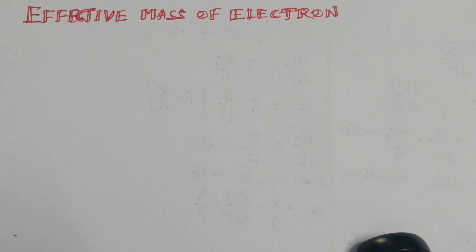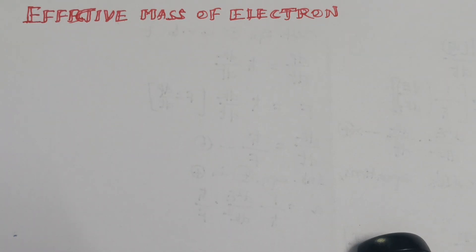When an electron is accelerated by an external electric or magnetic field in a periodic potential, the mass of the electron is not a constant — it is a variable.